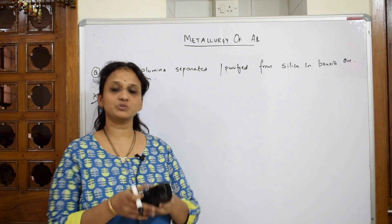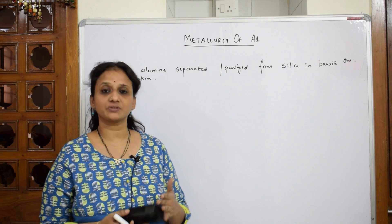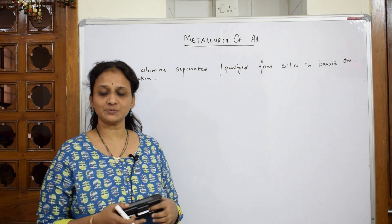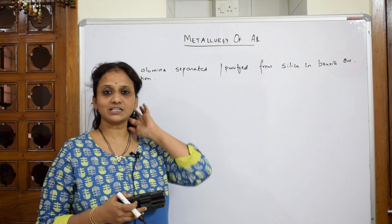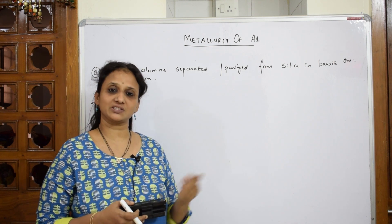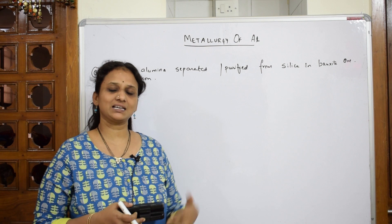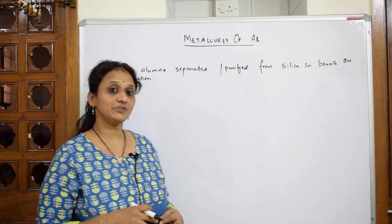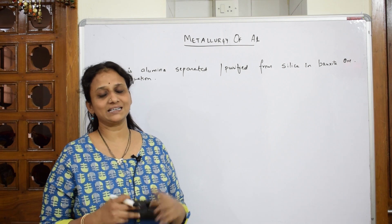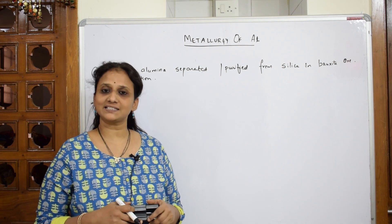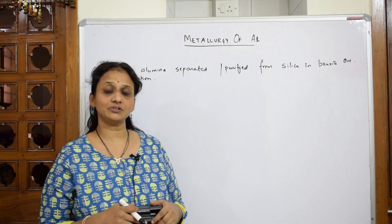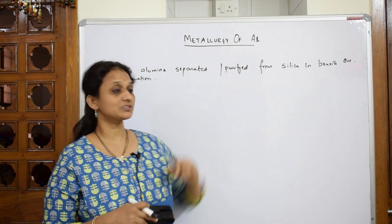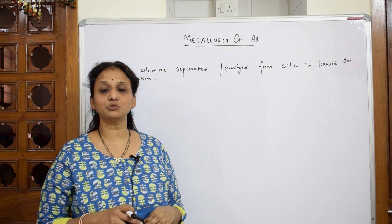Welcome back students to one more session of your metallurgy chapter. We've already seen the extraction of iron. Now I'll be directly going into the extraction of aluminium, then zinc, then copper, then silver, nickel, and zirconium. Whenever we speak about extraction of a particular metal, we are going to extract this metal economically from an ore.